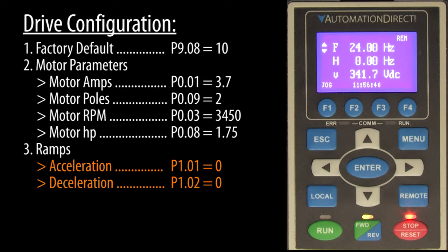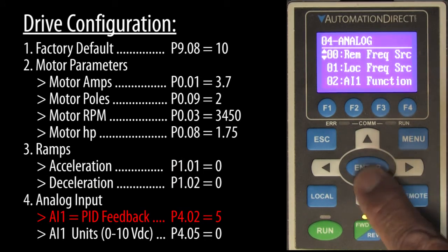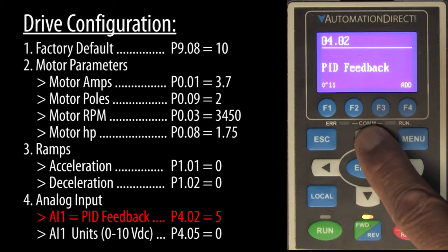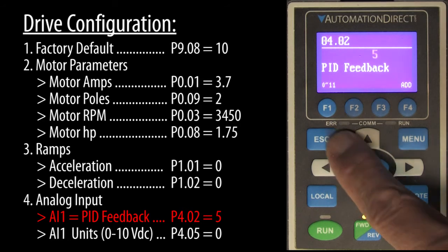I also zeroed out the acceleration and deceleration ramps because they will interfere with the PID function. We need to tell the drive that we are using analog input 1 as the PID feedback signal and that it will be used as a 0 to 10 volt signal.